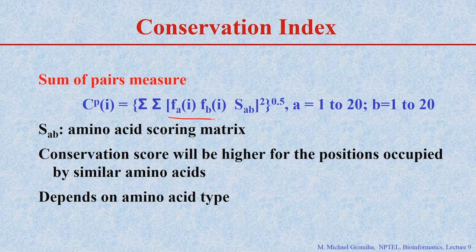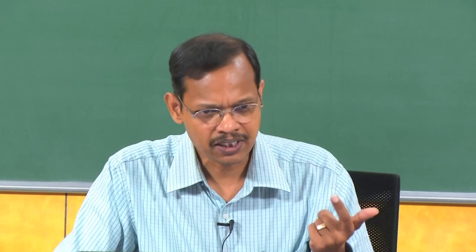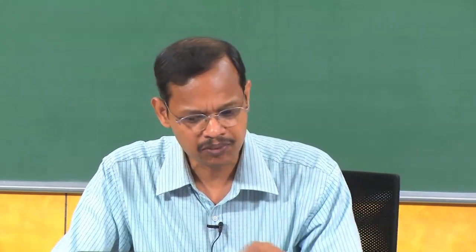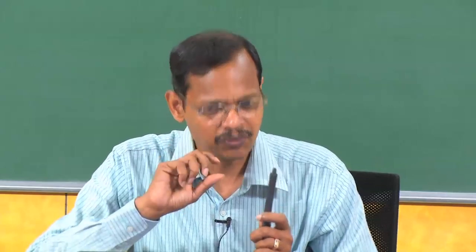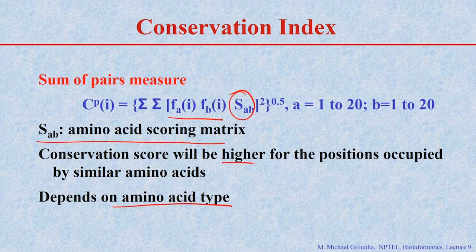There is another measure called the sum of pairs method. Here, if you have aligned sequences with frequencies F(e,i) and F(b,i), we give the scoring matrix depending upon the aligned residues. We use either a PAM matrix or BLOSUM matrix, where a and b both vary from 1 to 20. If the conserved position has similar residues rather than identical ones, we still get a high score. For example, lysine and arginine will score higher than lysine and alanine.